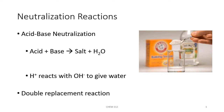An acid-base neutralization reaction is one where an acid and a base react to produce a salt and water. The salt may be acidic, basic, or neutral depending upon what type of anion and cation make up the salt. In an acid-base neutralization reaction, the hydrogen ion reacts with the hydroxide ion to produce water. This is a double replacement type of reaction, so we can predict what the products will be of a neutralization reaction.